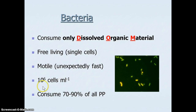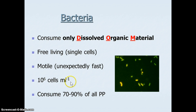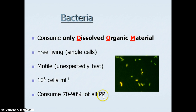On average, in one milliliter — a cubic centimeter of seawater — there are about 10 to the 6th, or 1 million, bacterial cells floating around in the ocean. So there's a lot of bacteria, and this is before they even have a good growth spurt.